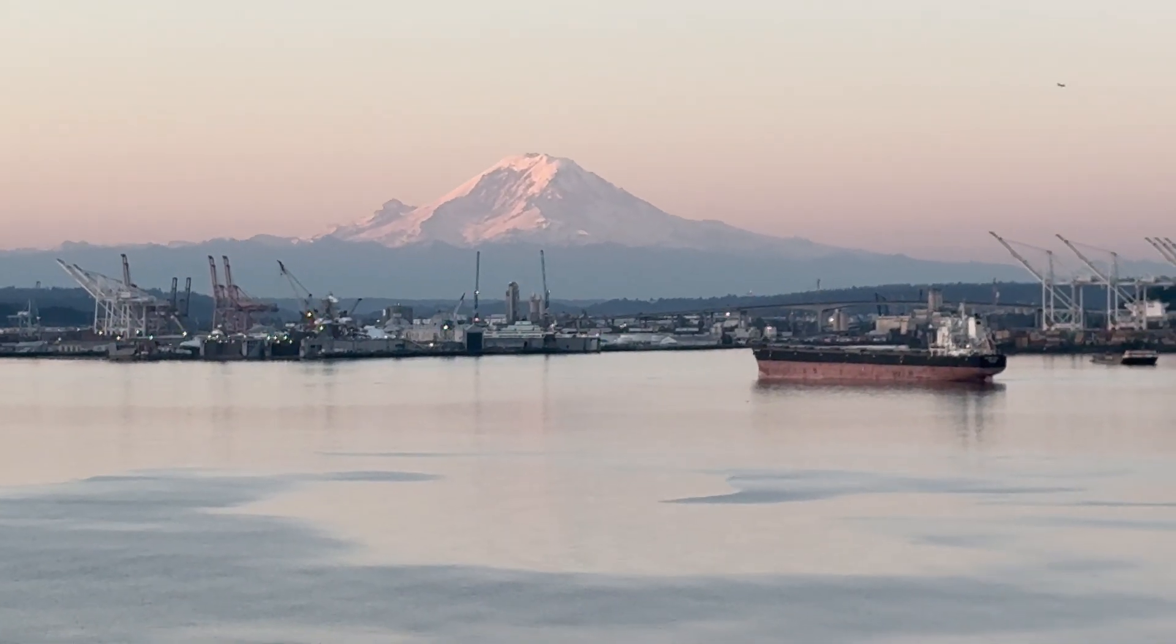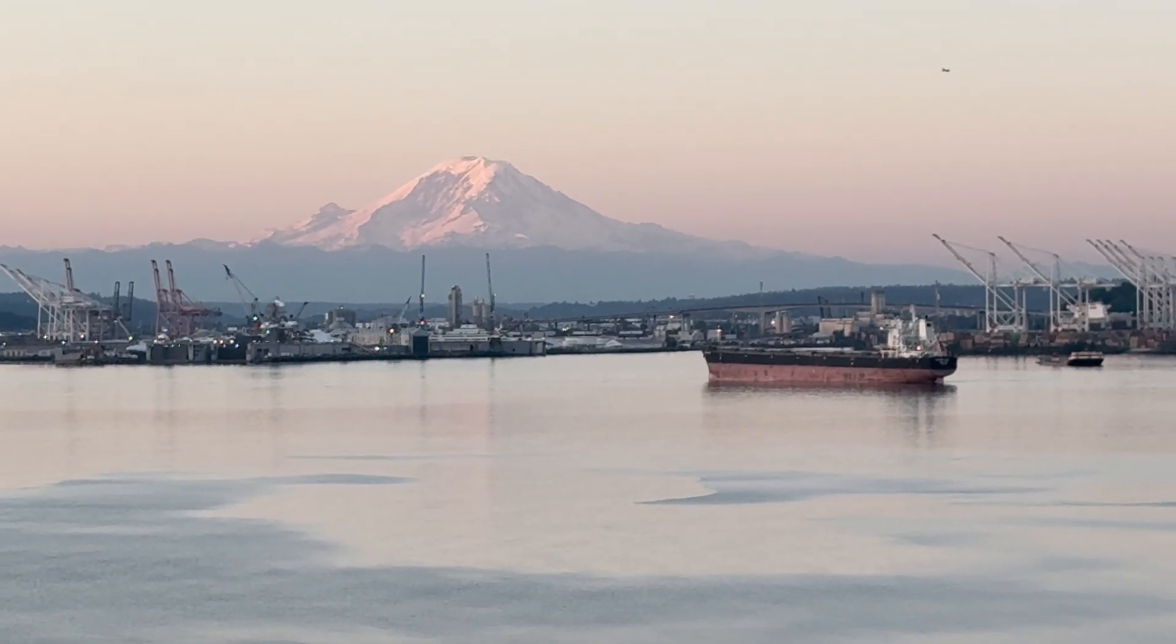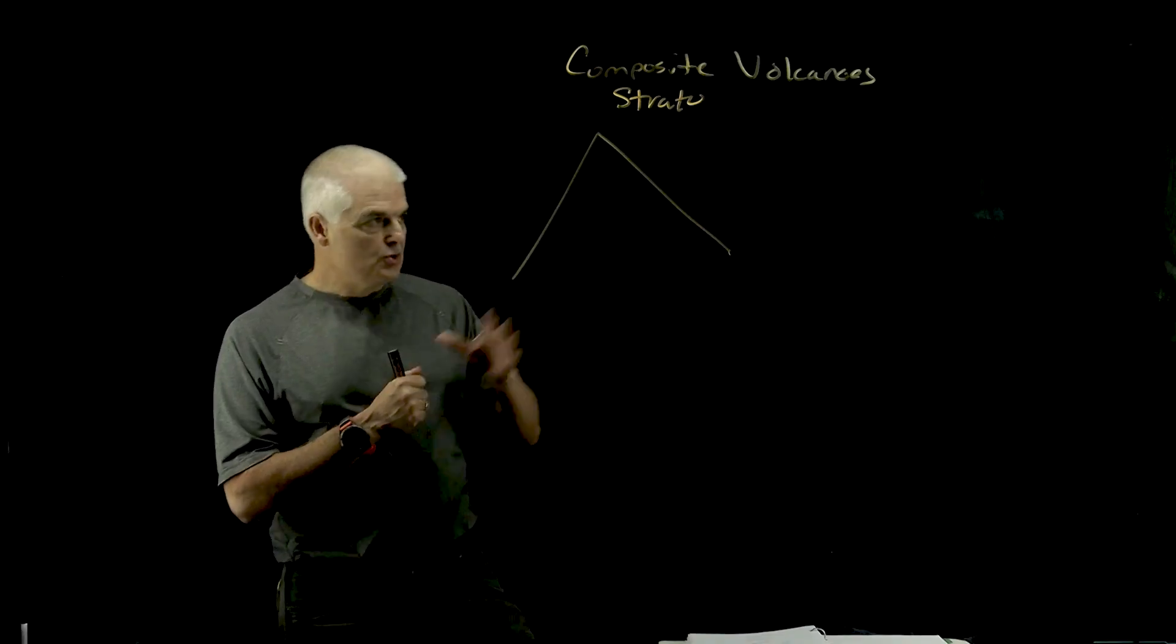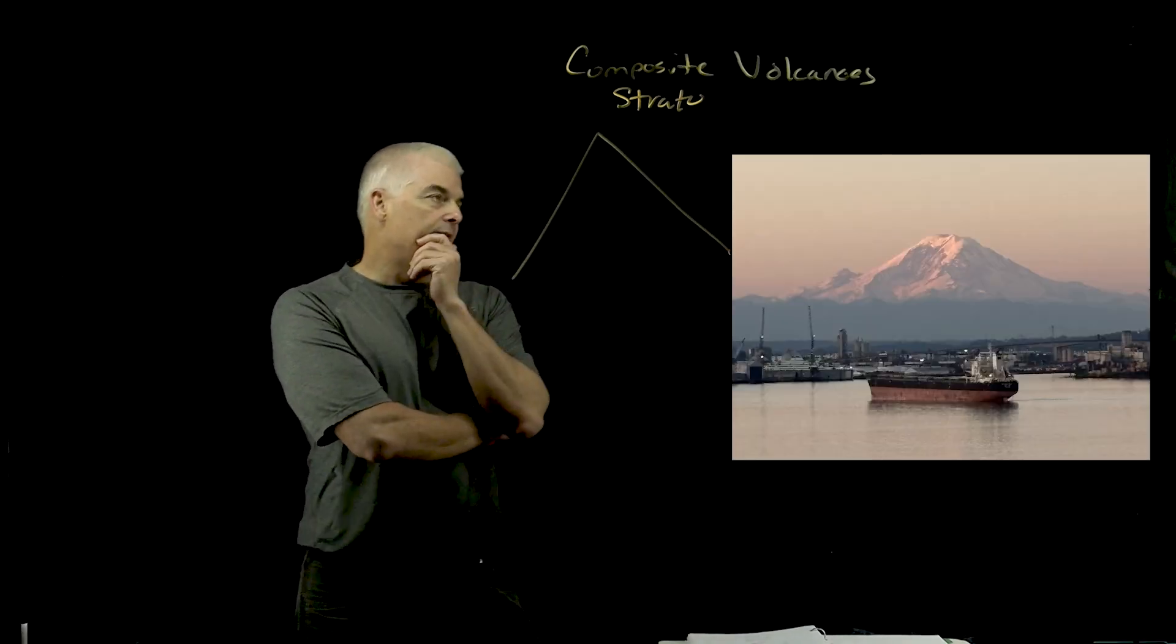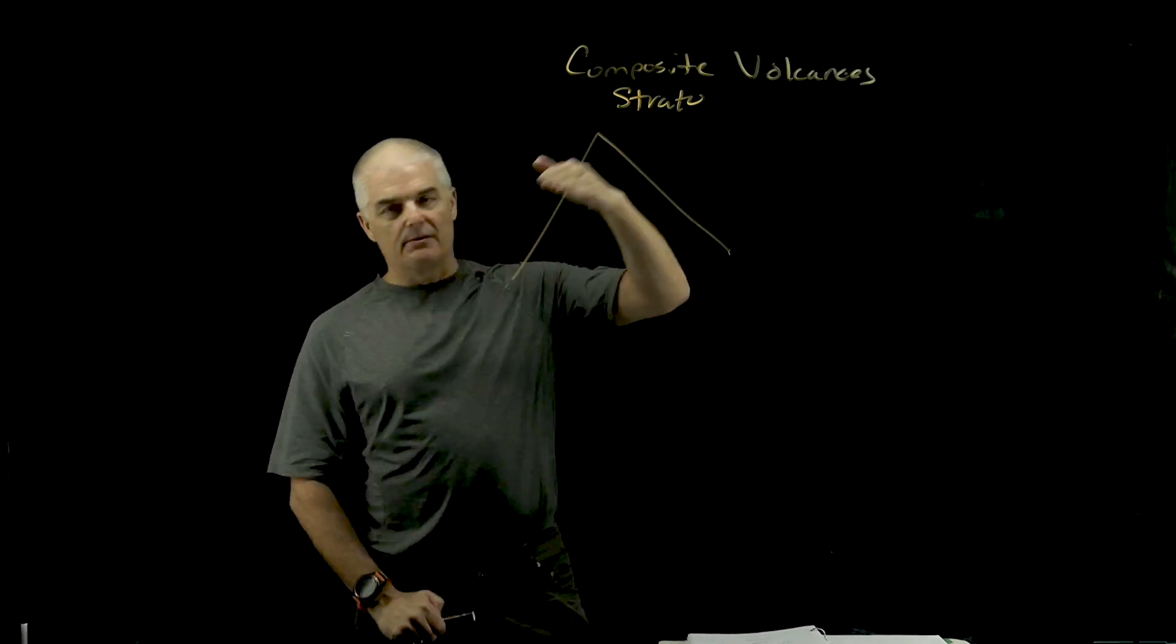You can see the shape of Mount Rainier and how it has that shape. They're called composite because they're made of composite materials, because now remember, these are the ones that explode.